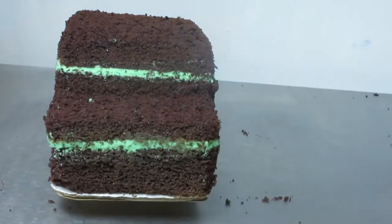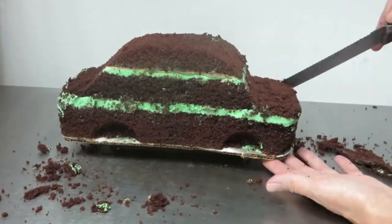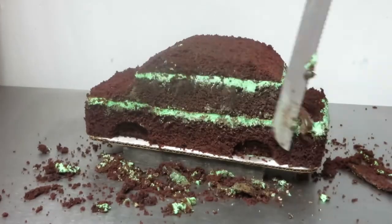I'm using a round cookie cutter to cut out holes for the wheels. A little more trimming and then the cake goes in the freezer for about 30 minutes.